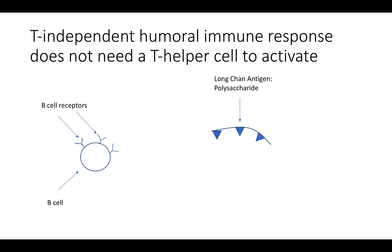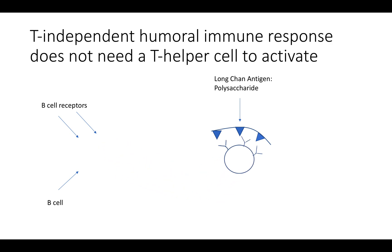On this polysaccharide, there are multiple antigenic determinants that are capable of attaching to the B-cell receptor variable region, and that's exactly what will happen. This B-cell will have multiple antigens bound to the B-cell receptors.